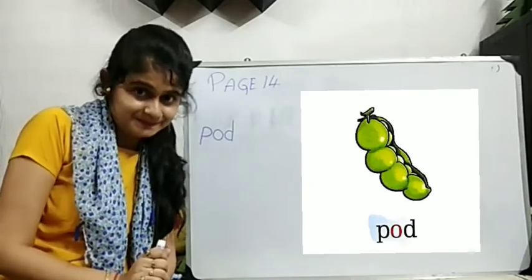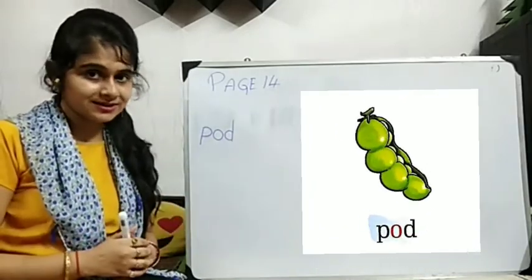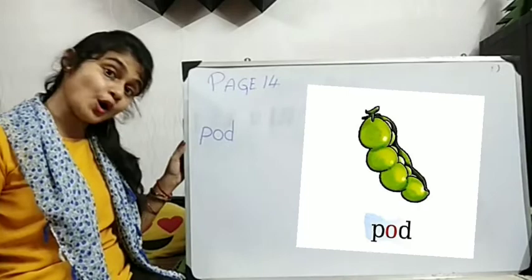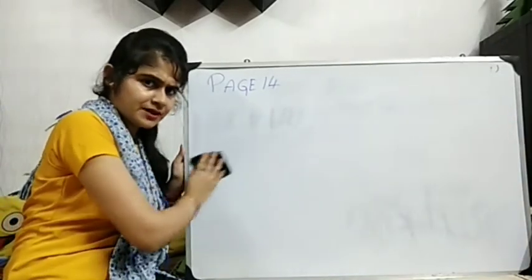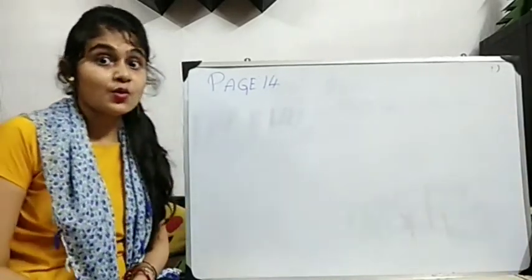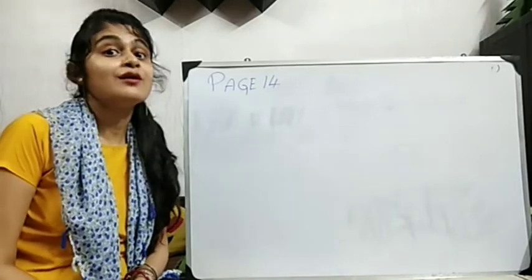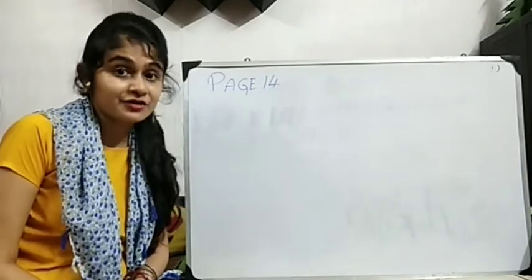Pod. Green color. So you can see the picture? P-O-D. Pod. Okay. Next. What sound we are doing UKG? Phonic sound of O. Right? We are doing phonic sound O.